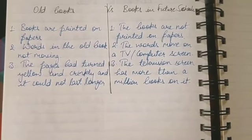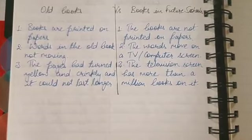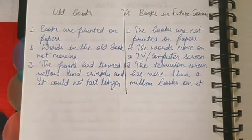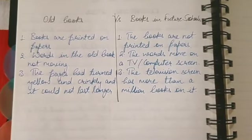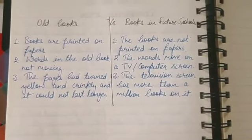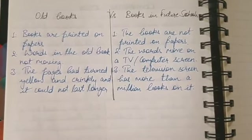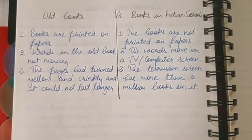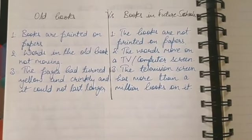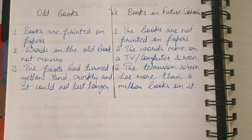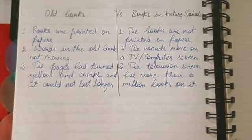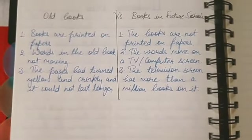In future schools, the words move on a TV or computer screen, as they are having e-books — the medium is TV or computer and the words tend to move on the screen. The third comparison: pages of old books had turned yellow and crinkly and could not last longer. But in future schools, the television screen has more than a million books on it.